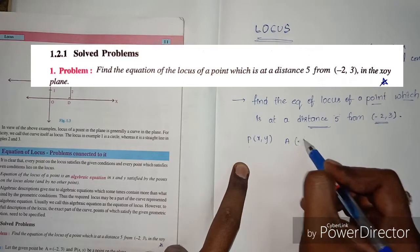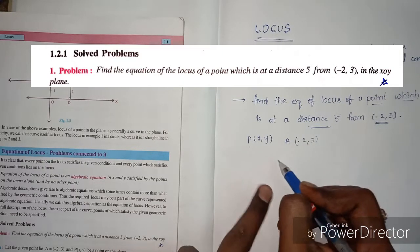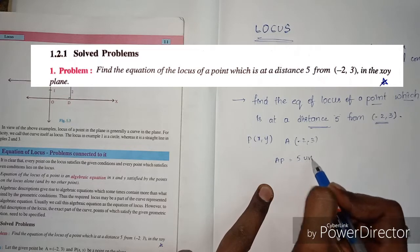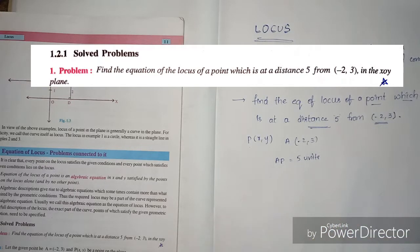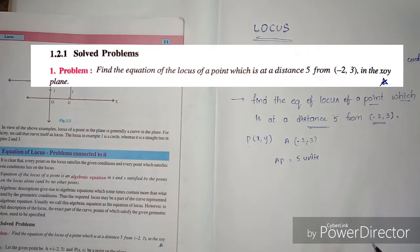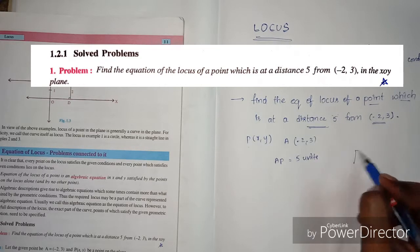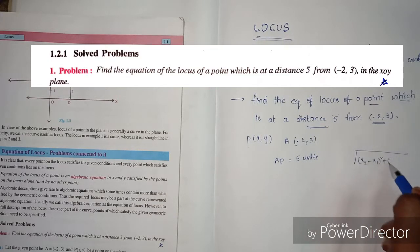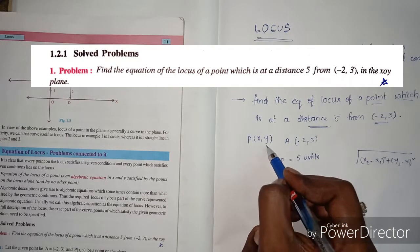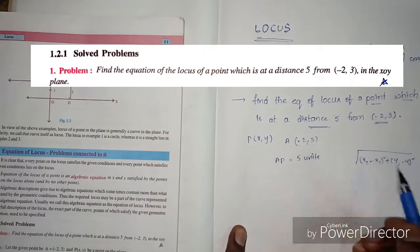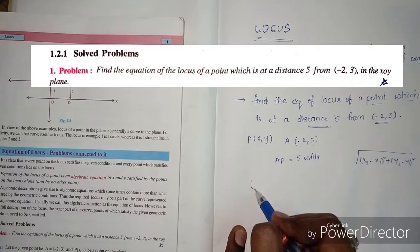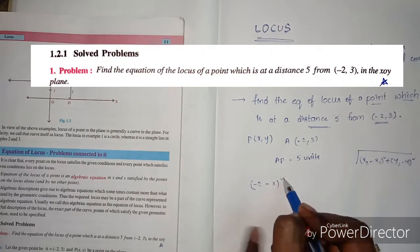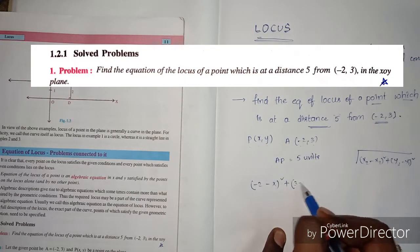The point P and the given point A — the distance between them is five units. Now what we have to find: using the distance formula between two points, which is the square root of (x2 - x1)² + (y2 - y1)².